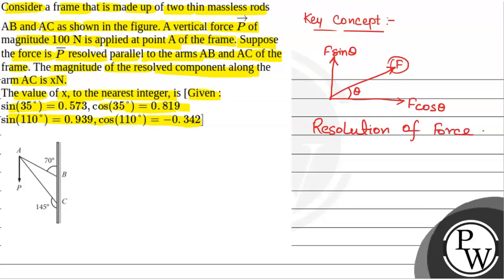Now, if we take a perpendicular bisector to line BC, this angle will be 90°. So this angle will be 55°, because the whole angle is 145°. And again, if we extend this, this is also 90°. So in triangle AOC — if we call this point O — we have this angle as 45°, this as 90°. So this is 55°, this as 90°. So this will be 35°, because the sum of all the angles of a triangle is 180°.